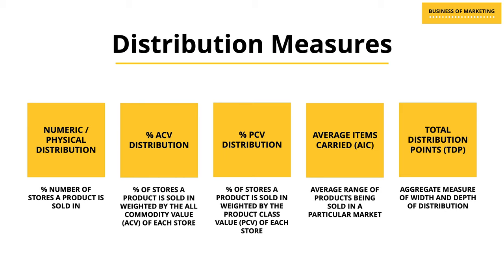These five measures — the first three, which are numeric, percentage ACV, and percentage PCV — are measures of the width of distribution. Average items carried is the measure of the depth of distribution, while TDP or total distribution points is the measure of the overall distribution, which takes both width and depth into consideration.